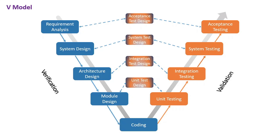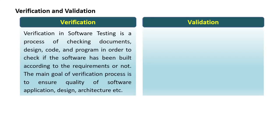Let us now understand what is verification and validation. Verification in software testing is a process of checking documents, design, code, and program in order to check if the software has been built according to the requirements or not. The main goal of the verification process is to ensure quality of software application, design, architecture, etc. The verification process involves activities like reviews, walkthroughs, and inspections.